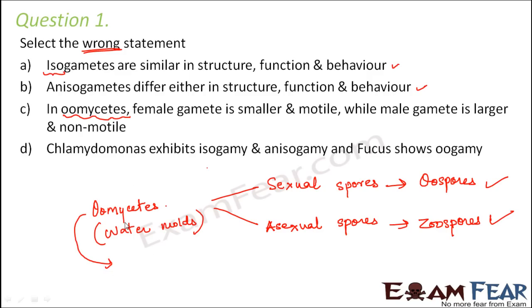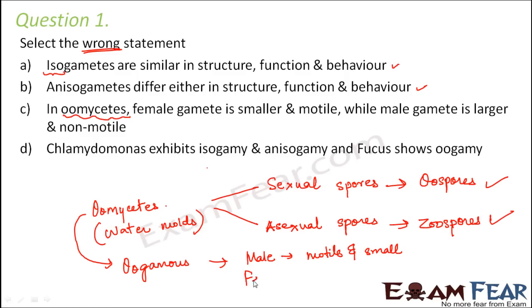As for the type of fertilization, oomycetes undergo oogamy. In oogamy, which is a form of anisogamy, the male gamete is motile and small, whereas the female gamete is non-motile and large. The statement says female gamete is smaller and motile — which is exactly the opposite.